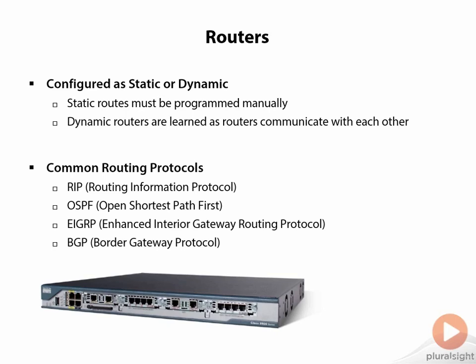Some common routing protocols are RIP (Routing Information Protocol), OSPF (Open Shortest Path First) — these are internal routing protocols. Then we have EIGRP (Enhanced Interior Gateway Routing Protocol), also an interior protocol meaning internal to a network. And then we have BGP (Border Gateway Protocol), which is an exterior protocol typically connecting networks not owned by the same company — basically the different routers on the internet.